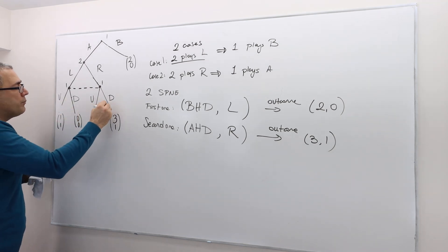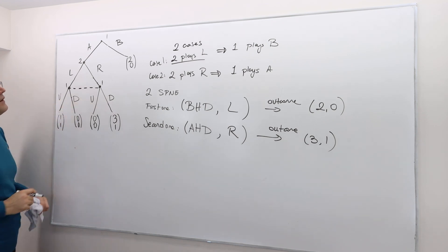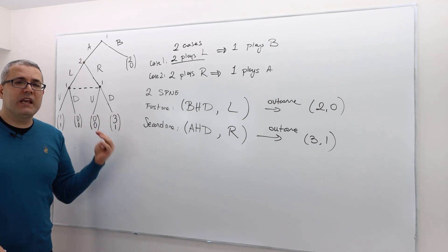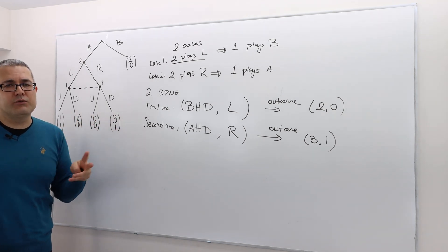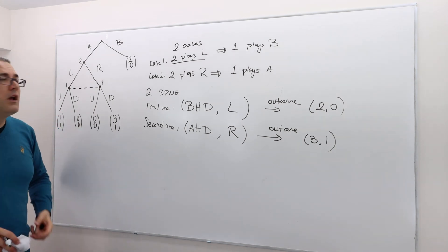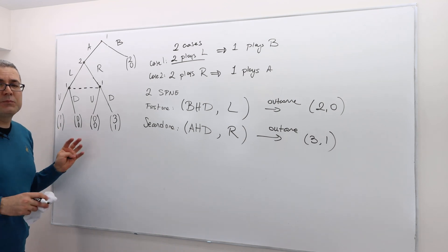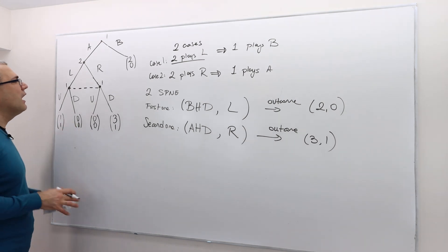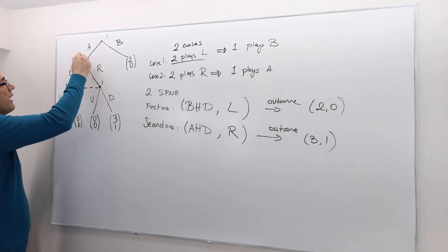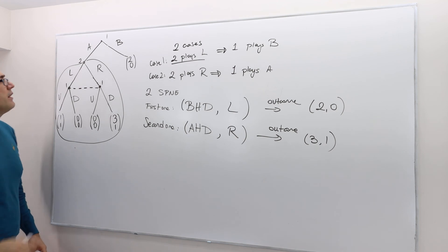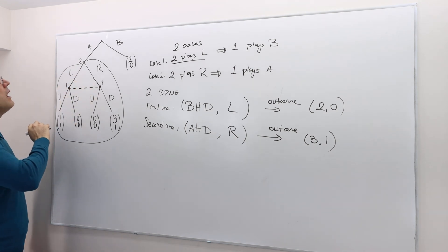So what would be different in this case? This becomes a game with imperfect information, and in those games we cannot use backward induction. Well, what do we do then? The idea I'm going to explain is not backward induction, but it's pretty similar. You look at the last sub-game.